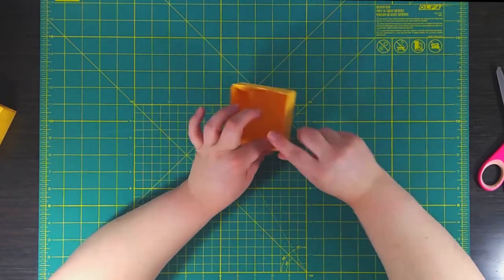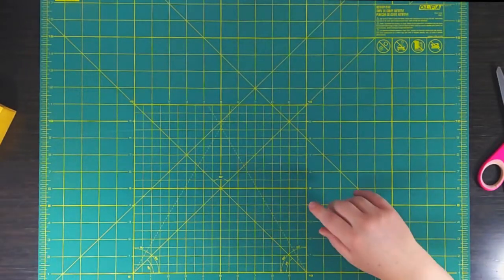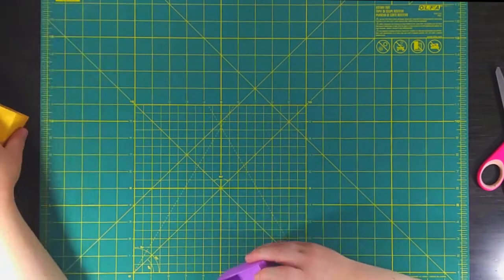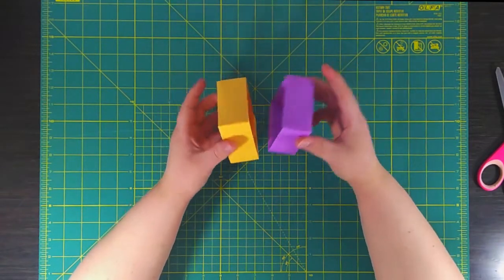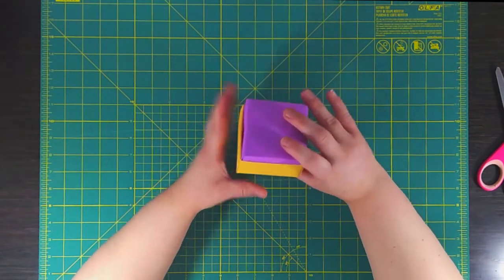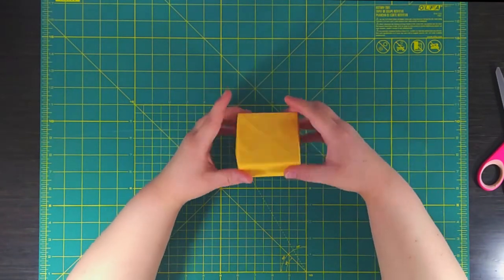These boxes are great because if you make one slightly smaller than another one they can go inside of each other and now you've got a lid and a bottom. And they're great for holding little gifts or trinkets or whatever you want.